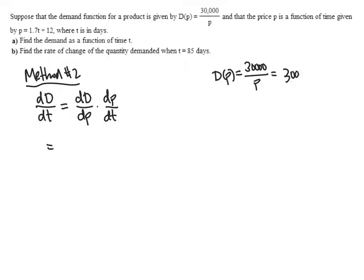which is just 30,000 times p to the minus 1. So D prime of p, that's just an easy power rule. Don't need the quotient rule at all. It's just negative 30,000 p to the minus 2.